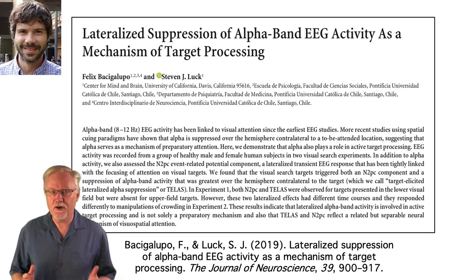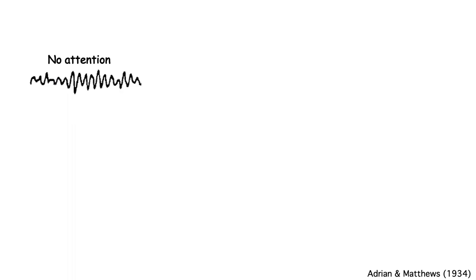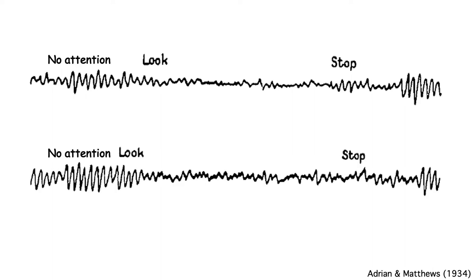This study was based on early EEG research showing that alpha band EEG oscillations are related to attention. In this classic study, the subject was looking at an object but initially not paying attention, and you can see alpha band oscillations. The experimenter then says 'look,' and the subject starts concentrating on the object. This causes the alpha to be suppressed. When the experimenter says 'stop looking,' the alpha comes back. And here we see a replication — you get a suppression of alpha band activity when somebody is paying attention.